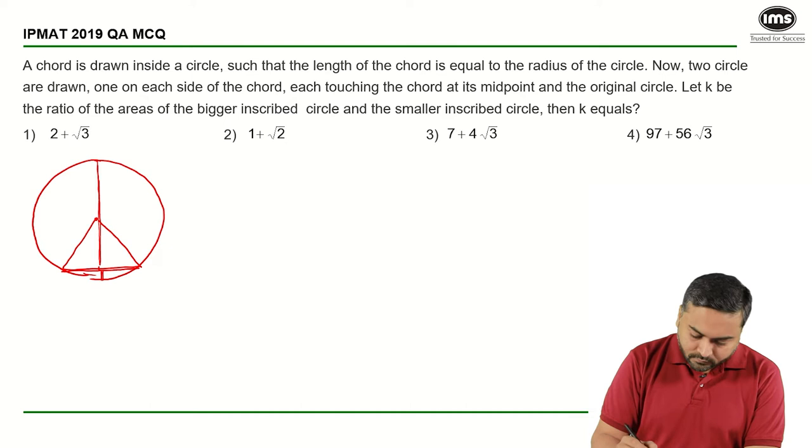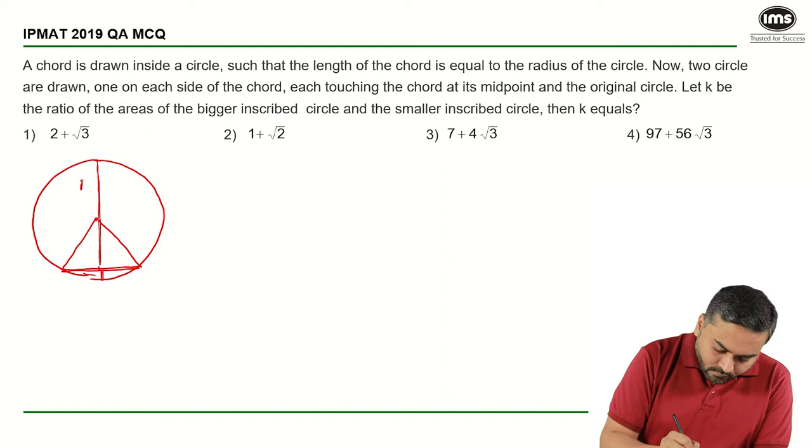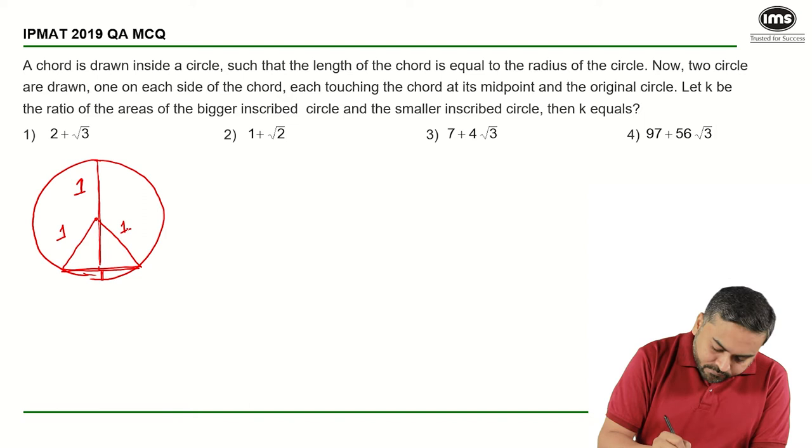Let us say that the radius of the original circle is 1. Let us say this is 1, this is also 1, which means this particular height of an equilateral triangle will be 1 plus root 3 by 2 will be root 3 by 2.